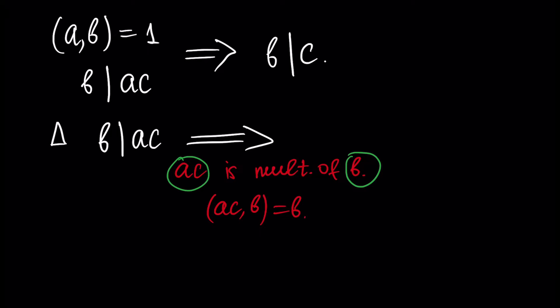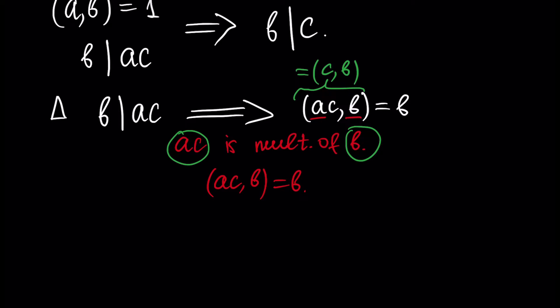This is our previous result. And since GCD of AC and B is equal to B, and since A and B are co-prime, from the result before this one, we know that this is equal to GCD of C and B. So GCD of C and B is equal to B.